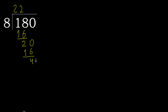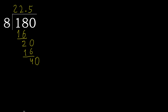That is not a number, therefore complete. Always complete with 0, here with a point. Complete point. 40. 8 multiplied by 5 is 40, which is not greater.